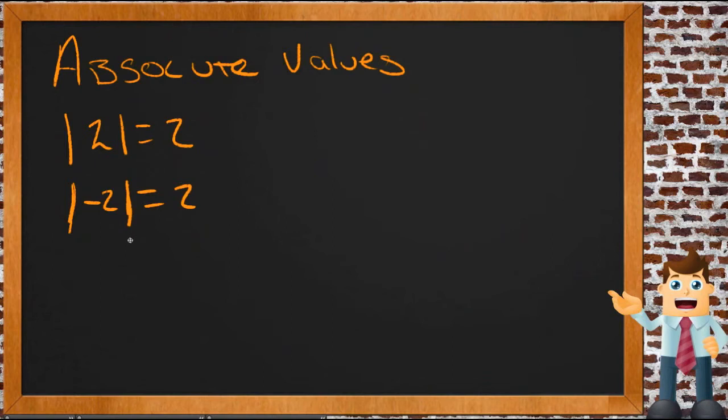But the reason we have absolute values is because sometimes in math, all we really care about is the distance between two things. We don't care about whether they're negative or positive. Imagine, if you will, a skyscraper, a big old apartment building. And please don't laugh at my artistry or lack thereof. I am nobody's idea of an artist.